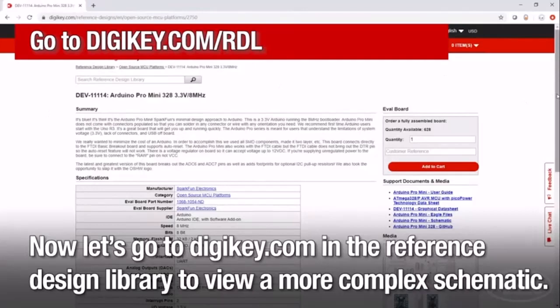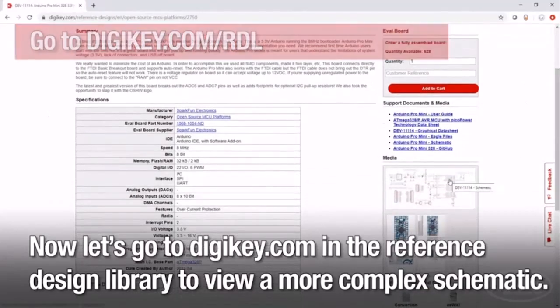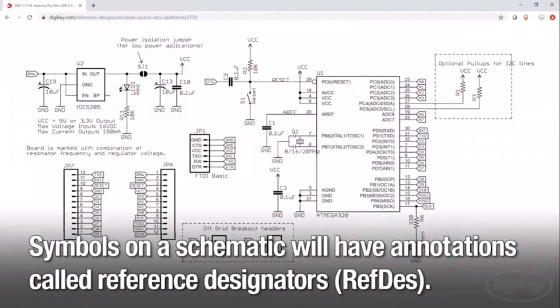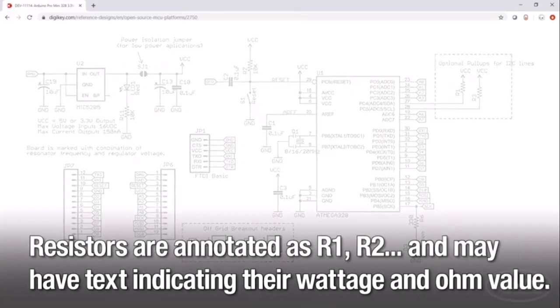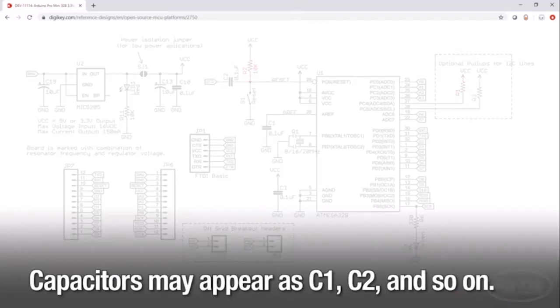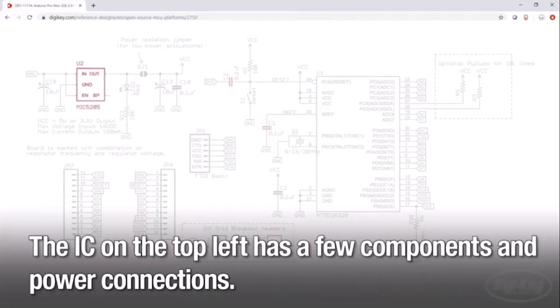Symbols on a schematic will have annotations called reference designators. Resistors are annotated as R1, R2, and so on, and may have text indicating their wattage and ohm value. Capacitors may appear as C1, C2, and so on. The IC on the top left has a few components and power